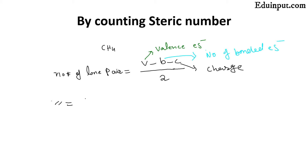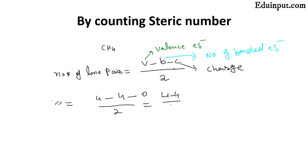So number of lone pairs in case of methane: first we check the central atom, which is carbon. Carbon has four valence electrons. The bonded electrons are also four, since all four electrons are bonded with hydrogen. The charge on methane molecule is zero. So: (4 minus 4 minus 0) over 2 equals zero. So the number of lone pairs in methane is zero.